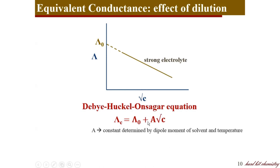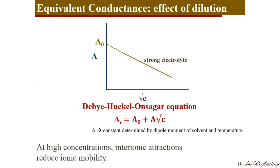For strong electrolytes, solvents play an important role. The increase in equivalent conductance with lowering concentration can be explained as follows: at high concentration, ions are kept closer to each other, so interionic distances become lower and interionic interactions become larger. The mobility of ions is affected because they attract each other, which reflects in lower conductivity at higher concentrations.